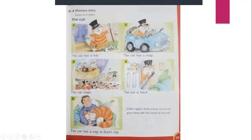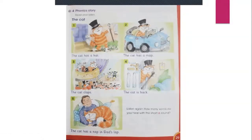Number four: the cat is back. Back — B-A-CK, A sound. Number five: the cat has a nap in dad's lap. Nap — N-A-P, A sound. Dad — D-A-D, A sound. Lap — L-A-P, A sound.